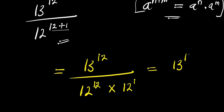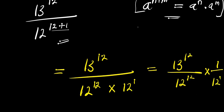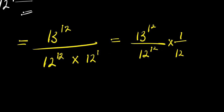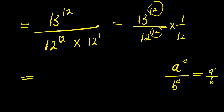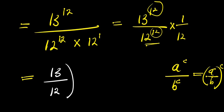We factor this as 13^12 divided by 12^12, times 1 over 12. Now, observing that both the numerator and the grouped denominator share the same exponent 12, we apply the identity A^C divided by B^C equals (A/B)^C. This gives us (13/12)^12 times (1/12).